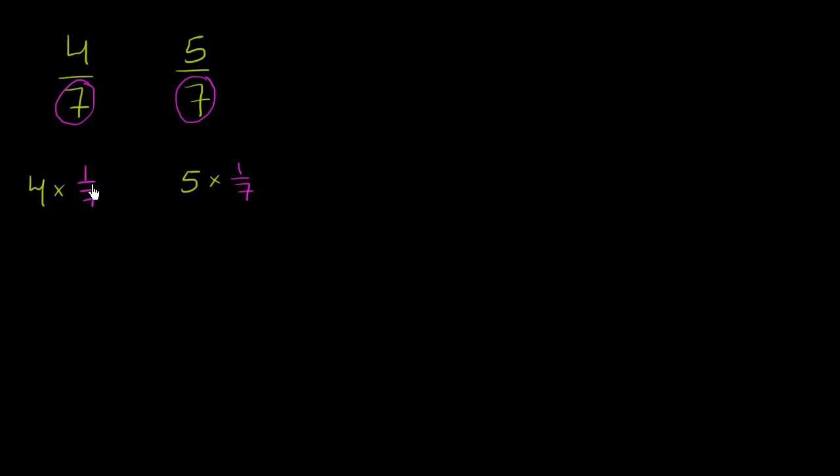So now, if I have 4 of something versus 5 of something, which is going to be a larger quantity? Well, clearly, 5 of this 1/7 is going to be more. So 4/7 is smaller, 5/7 is larger.